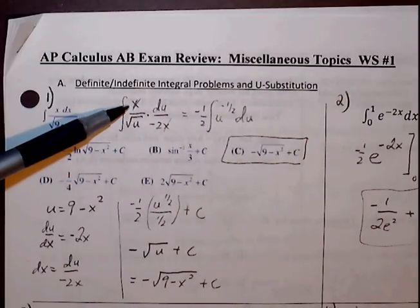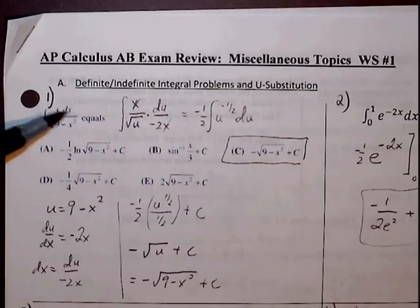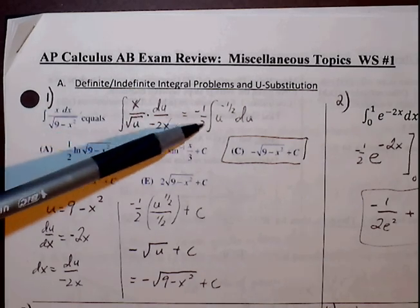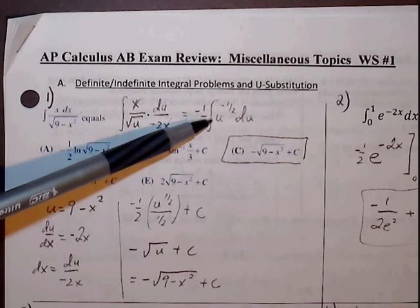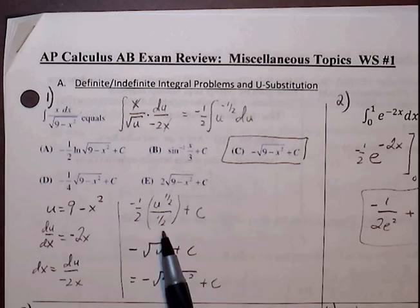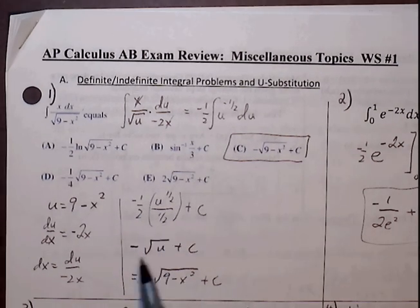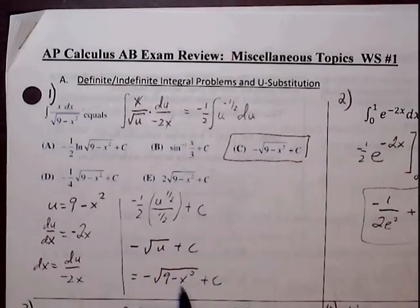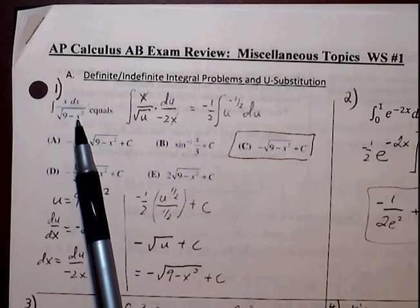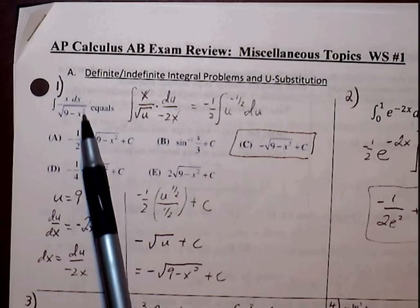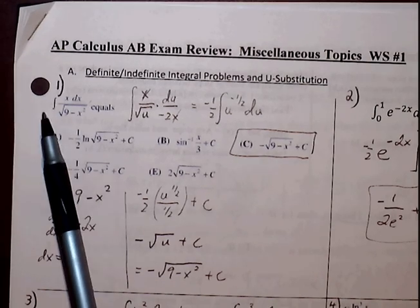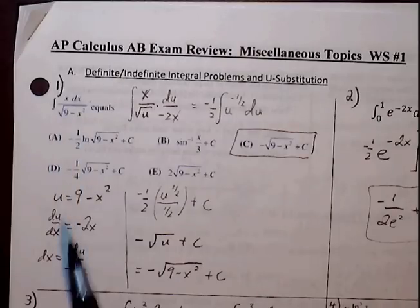The x stays for now and won't cancel out yet. dx gets replaced with du over negative 2x. Once we have that, a negative one-half gets pulled out, and we apply the rule for u to the one-half in the denominator, pulling it to the numerator. So u to the negative one-half becomes u to the one-half over one-half, plus c. We pull the 2 out front, the negatives cancel, leaving negative root u. The u-value gets replaced with 9 minus x squared. Notice that 9 minus x squared produces a negative 2x, which produces a negative one-half — the reciprocal of whatever we see with the derivative.